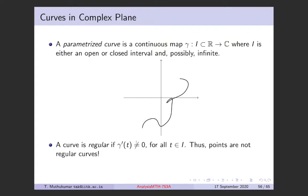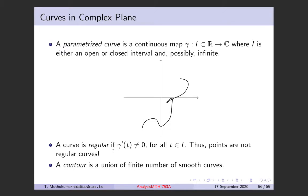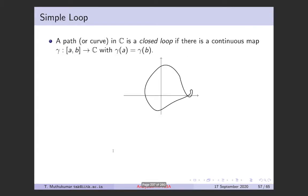Usually we work with regular curves. A contour is a union of a finite number of smooth curves — you can patch curves at the ends to get a contour. A loop is a curve such that its endpoints are the same: it starts from a point, goes around, and comes back to the same point, meaning gamma of a equals gamma of b. Such a curve is called a loop or closed curve.